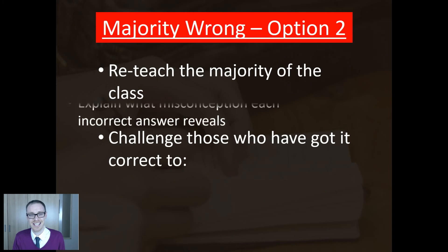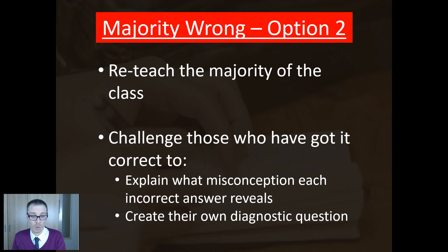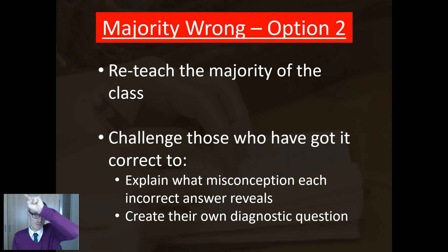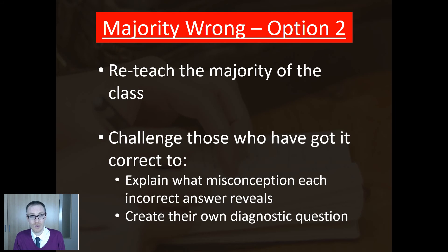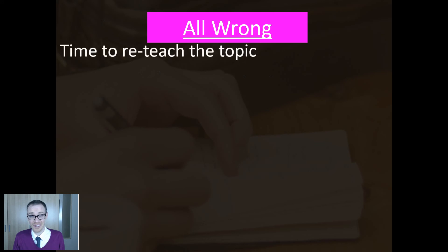Another option is that you might decide you need to reteach the majority of the class. But what do you do with the kids who've got it right? I wouldn't necessarily give them follow-up work or let them crack on with the next topic. Instead I'd say: write down in words what each of the wrong answers reveals — why is the rest of the class getting this wrong — and then create your own diagnostic question. As I've shown in the video on the benefits of kids writing questions, there are massive gains to be made from students doing this.